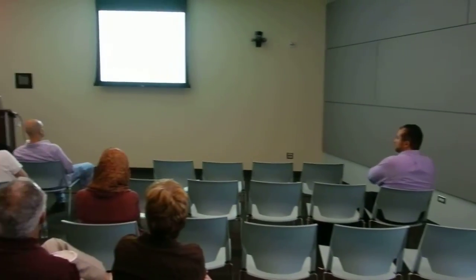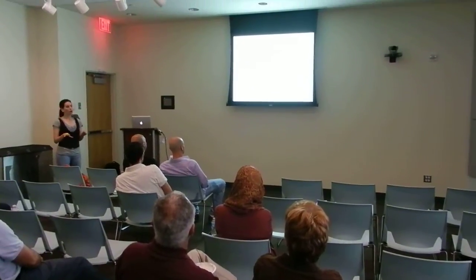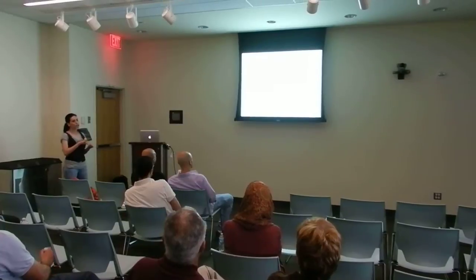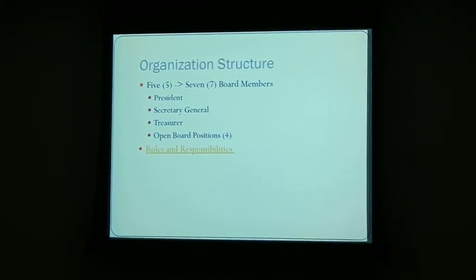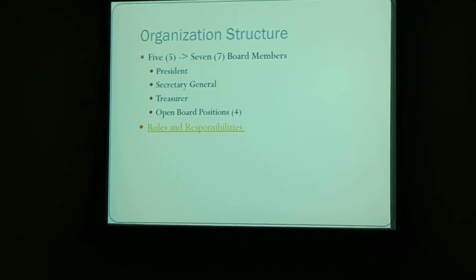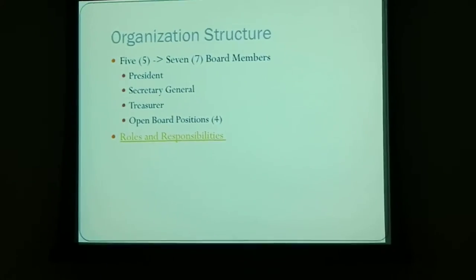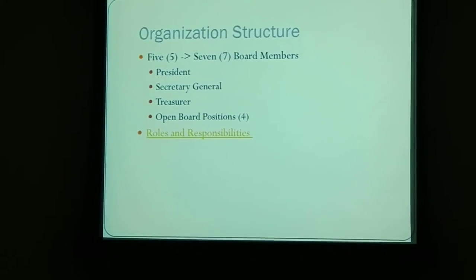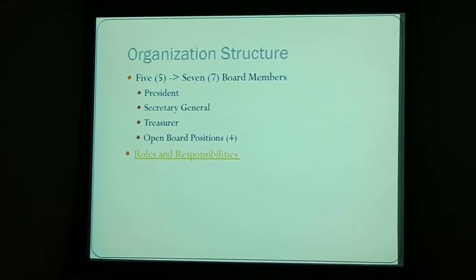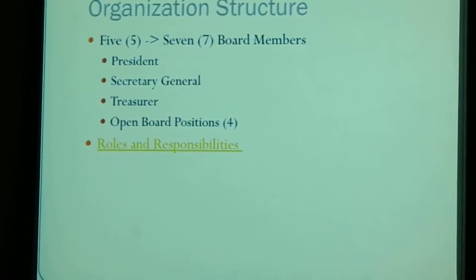With the new organization structure, currently there are five board positions, while we're expanding it to seven board positions. On those seven board positions, there's the president position, the secretary general, the treasurer position, and we have what we call the four open board positions.